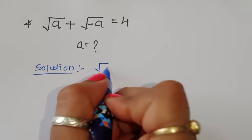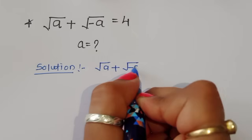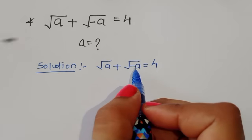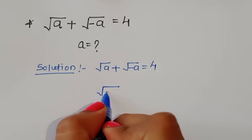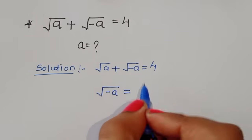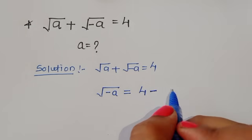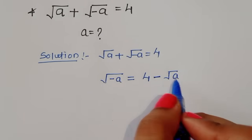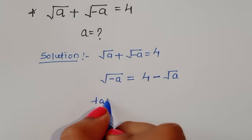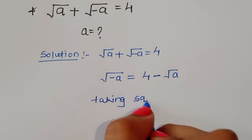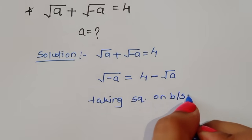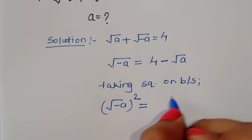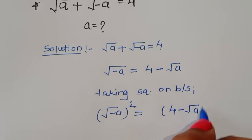Square root of a plus square root of minus a is equal to 4. We can write the square root of minus a is equal to 4 minus square root of a. Now, taking square on both sides, we get: square root of minus a whole square is equal to 4 minus square root of a whole square.